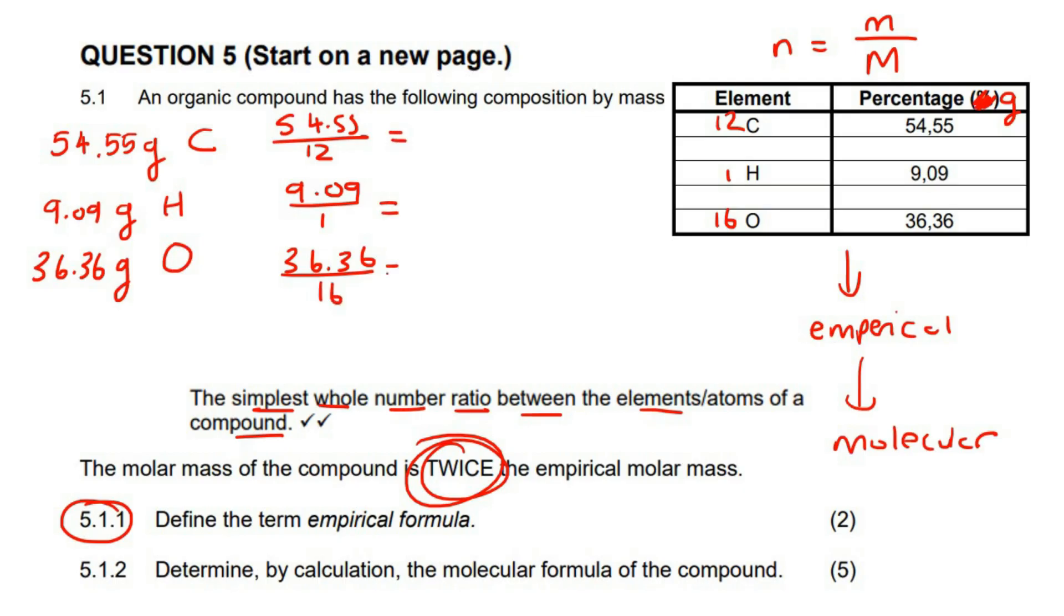Now if we go calculate each of those, we end up with 4.54. You can just keep two decimals. It's really not that important with this part. And then for hydrogen, you're just going to get 9.09, and then for this one over here, you're going to get 2.27.